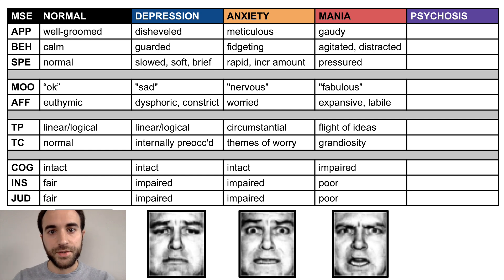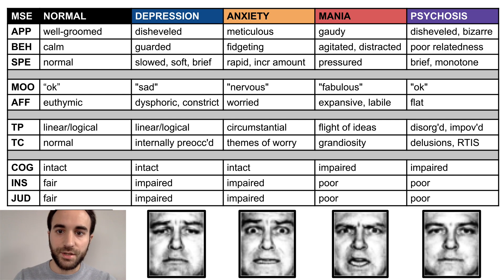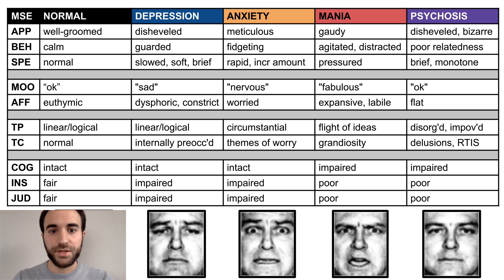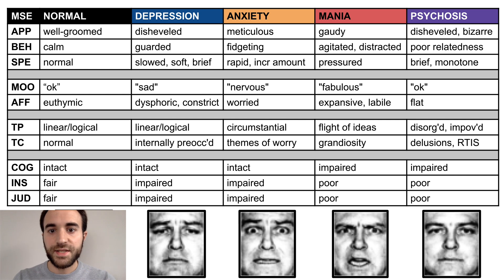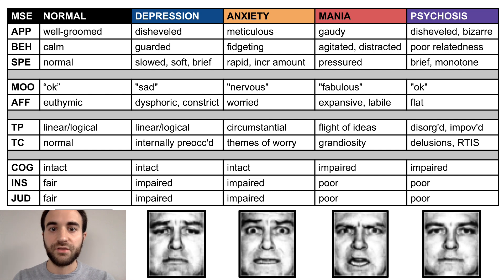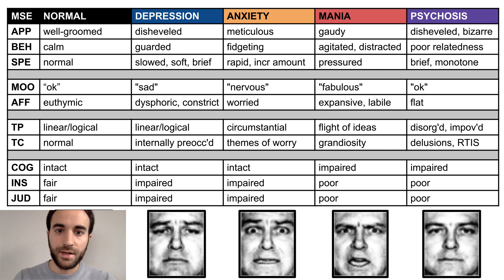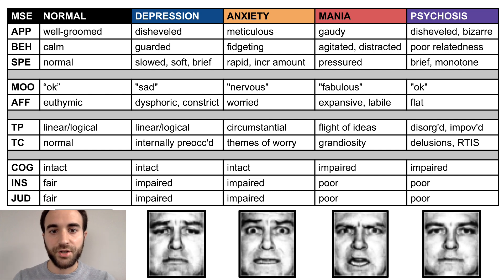Finally, let's discuss psychosis. Psychosis is a highly debilitating condition and may lead to extreme states of dishevelment. Due to disorganized thought patterns, these patients may also dress bizarrely, such as wearing clothes on the wrong parts of the body or wearing non-clothing items. Patients with psychosis have impaired relatedness, which refers to abnormalities in social reciprocity, such as limited use of nonverbal communication. Similarly, their speech may be brief and monotone, lacking the normal changes in tone that healthy individuals use to convey meaning and emphasis. They may describe their mood with simple, vague words, but for those suffering from paranoid delusions, they may instead convey fear or worry. Their affect is often flat, showing no emotion and no reaction to stimuli.